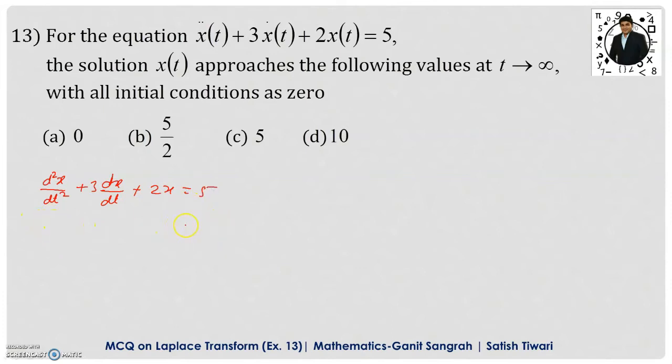Now we take the Laplace transformation to both sides and we will have, by the formula, s²x̄ minus sx(0) minus x'(0). This we have written as the Laplace transformation for the first term. For the second term, taking 3 outside, we write the Laplace transform as s·x̄ minus x(0), plus 2·x̄ equals 5/s, since Laplace transformation of 1 is 1/s.